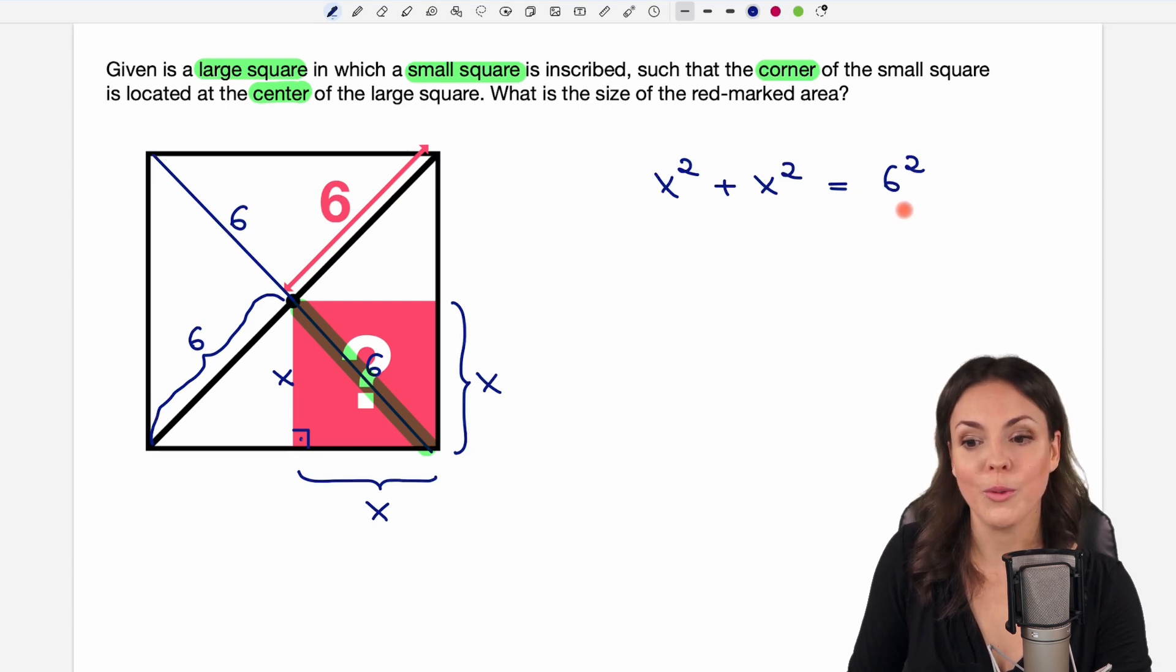We have one equation we can solve this equation for x. We could simplify the left side we have x squared plus x squared this is two of those green x squared then and on the other side we have six squared that is 36.